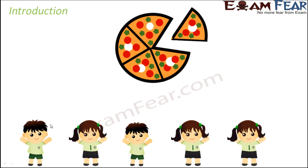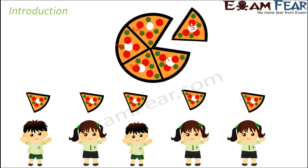So what do you do? You take out slices from the pizza, as you can see on the screen. This is how the slices come out. In this way you divide the entire pizza into 5 equal parts — 1, 2, 3, 4 and 5 — and then you give 1 slice each to your friend.